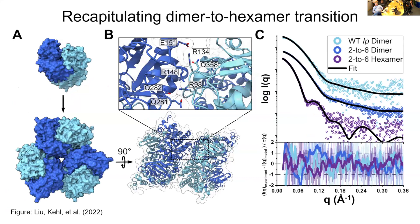We found something that worked: with only seven residue mutations on the interface, we were actually able to convert a dimeric RuBisCO into a hexameric RuBisCO. Interestingly, there are three curves, not just two. We think we captured that moment in evolutionary time where a RuBisCO could be transitioning to a higher-order oligomeric state, because we had a population of dimers but also a population of hexamers from the same sample.